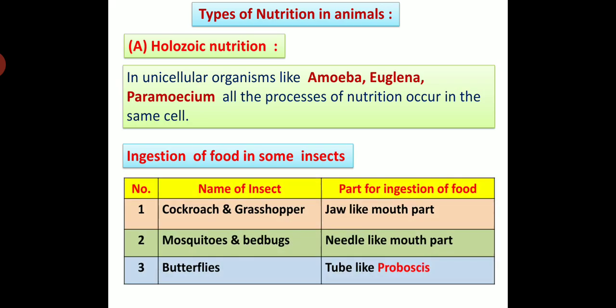Now we are going to see about some insects and their parts for ingestion of food. First, cockroach and grasshopper - their part for ingestion is jaw-like mouthparts. Second, mosquitoes and bedbugs - their part for ingestion is needle-like mouthparts. Third, butterflies - their part for ingestion is a tube-like proboscis.